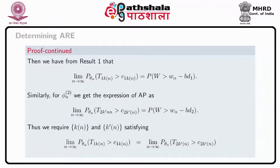From result 1, the limit of P(theta_n) of T1_{k_n} greater than C1_{k_n} equals probability that W greater than w_alpha minus B*D1. Similarly for phi_n2, the AP equals probability that W greater than w_alpha minus B*D2. We require k_n and k prime_n to satisfy that the two limits are equal, and after simplification, the limit as n tends to infinity of k prime_n divided by k_n equals the required result as given in result 2. This completes the proof.